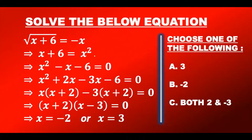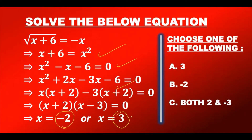To end the class, I've written one equation, squared both sides, moved all terms to the left, and factorized to get roots -2, 2, and 3. Now we have three choices: if you accept answer A, your answer is 3; if you accept B, your answer is -2; if you accept C, your answer is 2 and -3.